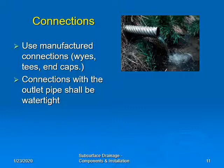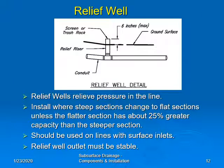For connections, NRCS specifies that we use manufactured connections — Y's, T's, and end caps — and that connections with the outlet pipe shall be watertight. A relief well is meant to relieve pressure in the line. They're usually installed where steep sections change to flat sections, unless the flatter section has about 25% greater capacity than the steeper section. Relief wells are often used on lines with surface inlets, and the relief well outlet must be stable. The water from a relief well should be released at or near the ground surface to minimize pressure on the system. Relief wells are most often used where a new system is connected to an existing main or sub-main that does not have the required capacity. Relief wells should not be used to under-design a new main in a system to save money.